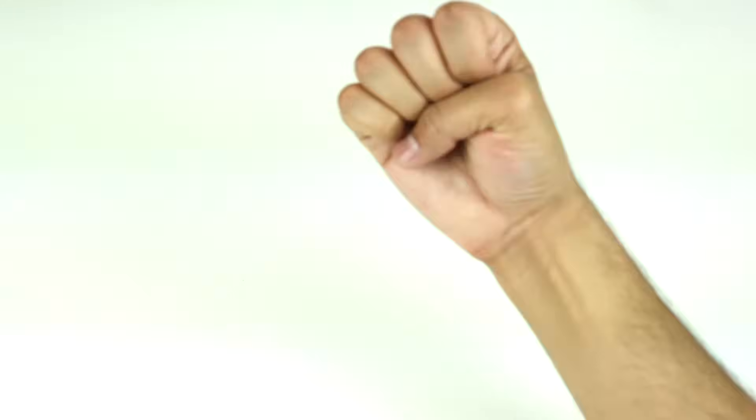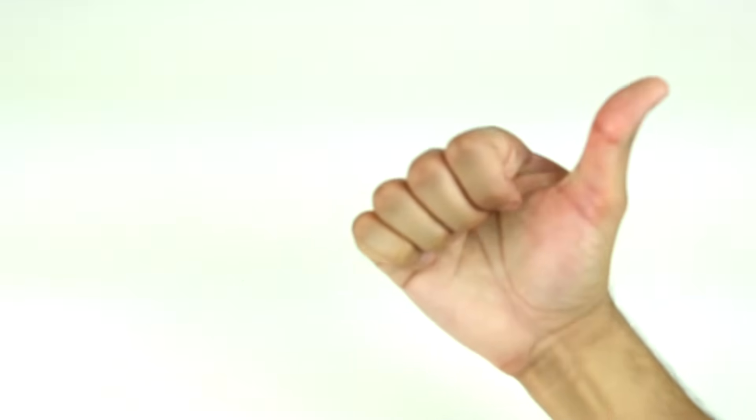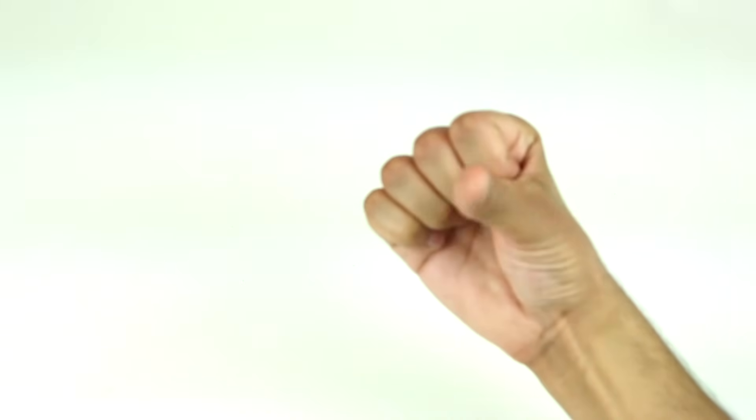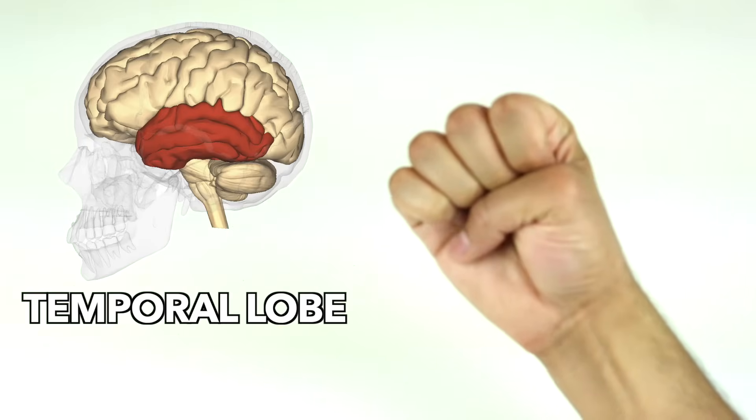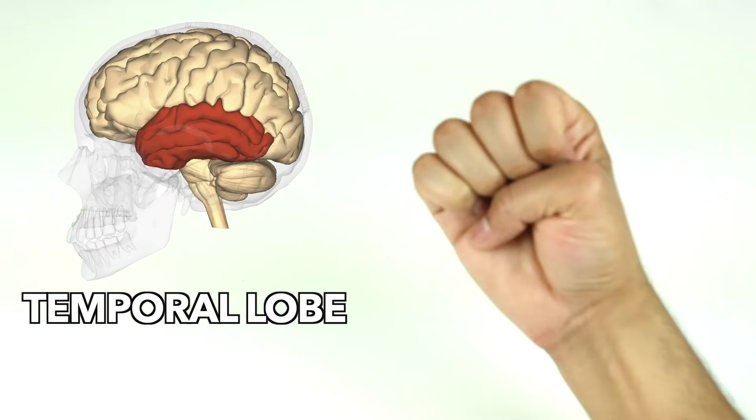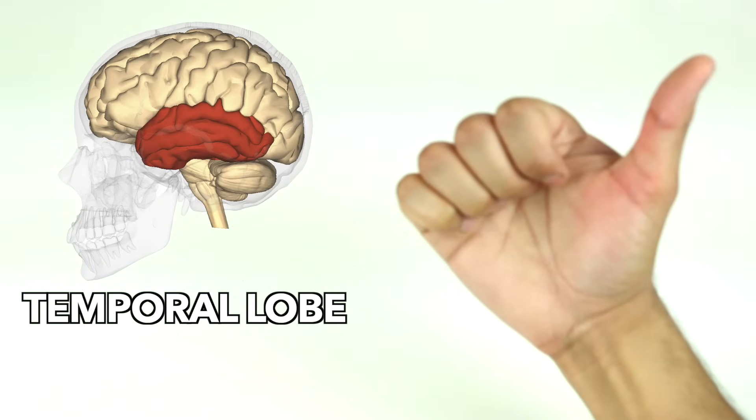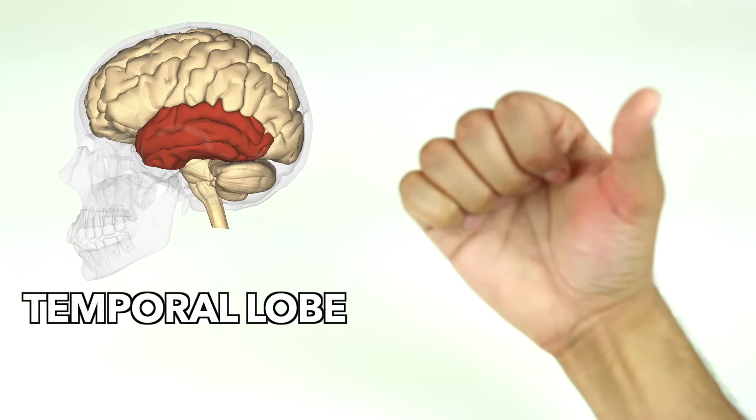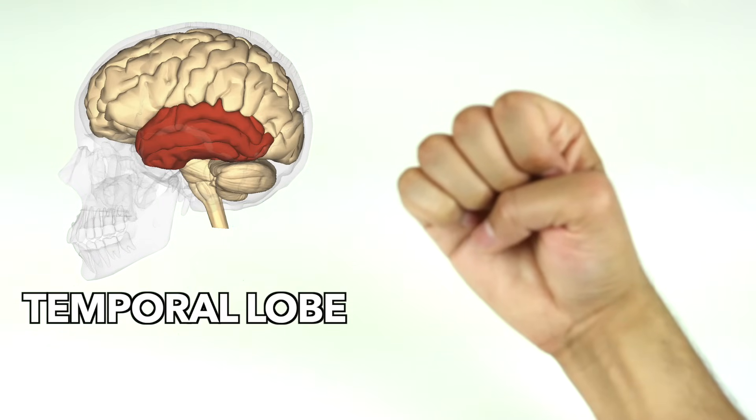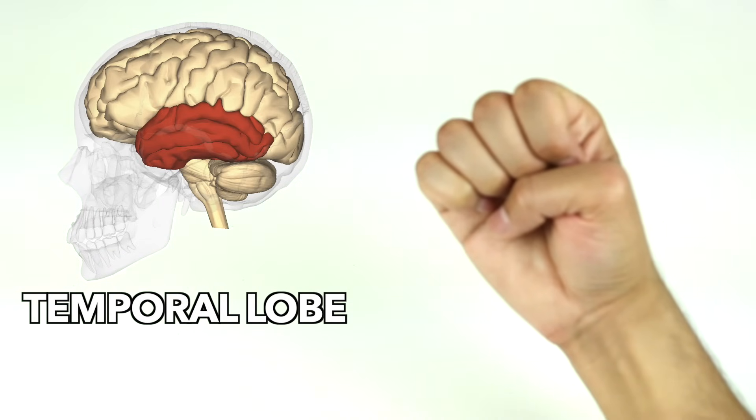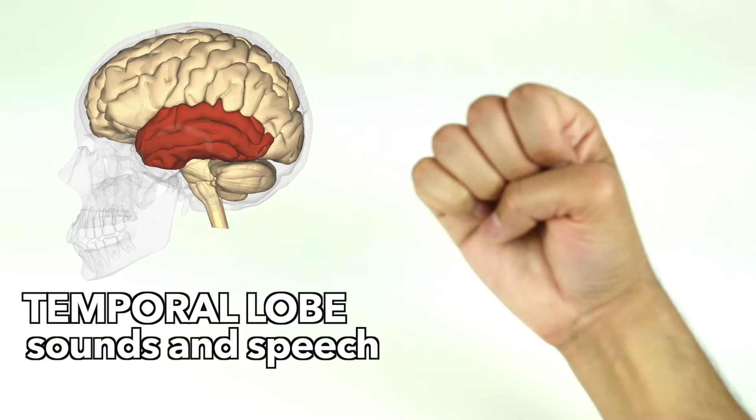Take a look at your thumb. See how it can lift away from the rest of your fist, but remain attached to your hand? That's similar to the temporal lobe. The back of the temporal lobe is connected to the parietal and occipital lobes, but the front section can be lifted away from the rest of the brain. The temporal lobe is responsible for understanding sounds and speech.